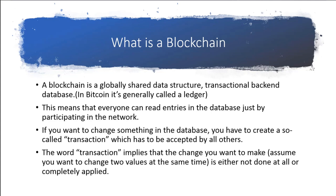A blockchain is a globally shared data structure — it is a transactional backend. Bitcoin calls it a ledger. When we go to the explorer part of the course, you'll see the transactions, wallet addresses, and understand that it's open and permissionless — anyone can view what's going on on the blockchain. If you have to change something, you append that transaction. The word transaction in the blockchain world implies you want to change two values at the same time. In reality, it's either done or it's not done — you're not going to partially add a block. It's all or nothing.